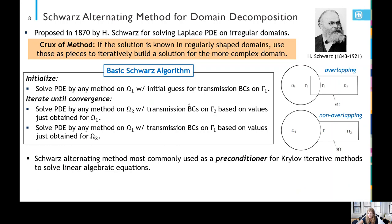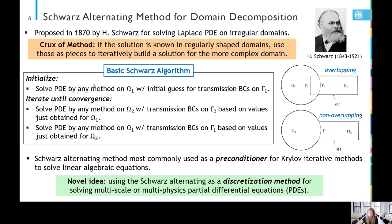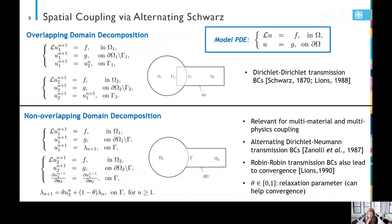The method iterates back and forth between solving your problem in omega-1 and omega-2, with information propagating through transmission or boundary conditions on boundaries gamma-1 and gamma-2 in the overlapping case and gamma in the non-overlapping case. What I wanted to emphasize is that if you've heard of Schwartz, you've probably heard of it in the linear solver literature, where it's often used as a preconditioner for solving linear algebraic equations. Our idea here is something fundamentally new: to use the method as a discretization method or a nonlinear solver for solving multiscale, multiphysics PDEs.